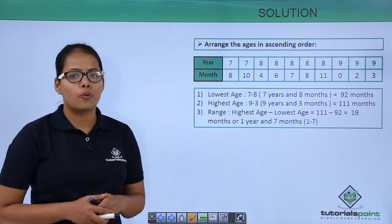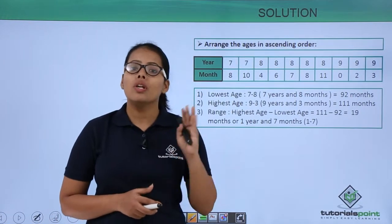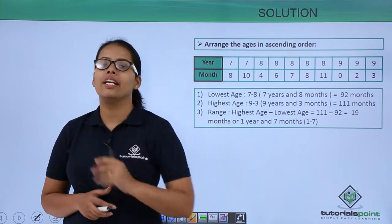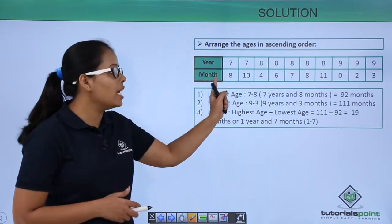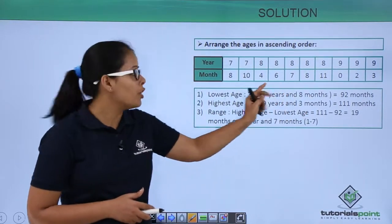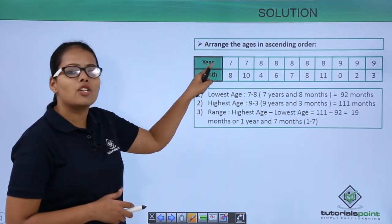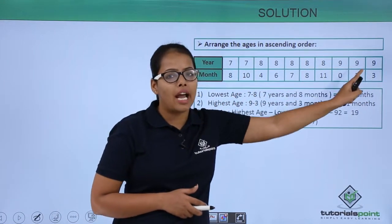What you have to do in this problem so that you can easily find out lowest age, highest age? You'll represent the data in ascending order. So I am using the same table but here the data represented in this table is in the ascending order. So you can see here this age is the lowest age and the age on your right hand side is the highest age.